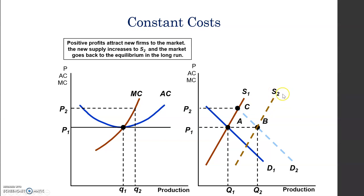We get a new supply curve and we try to find the new price, which is again P1. Because costs are constant in this industry, the marginal cost and average cost curves do not move regardless of how many firms are in the market. So we return to the point where profits are zero at the same price P1, though the quantity exchanged in the market is now greater because there are more suppliers and consumers.